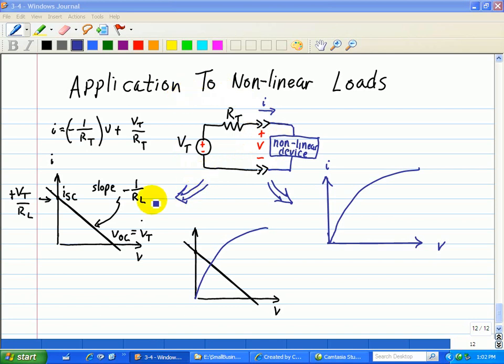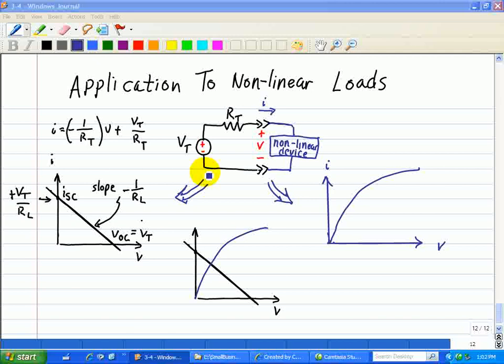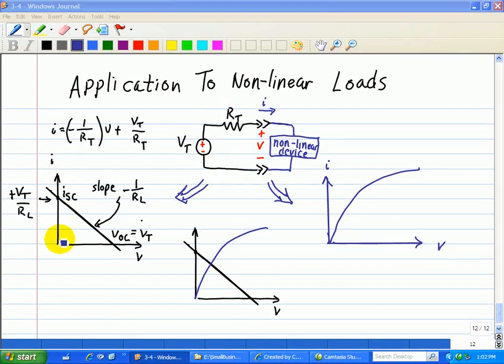So here are the IV characteristics associated with the source, in which you have the current on the vertical axis and V on the horizontal axis. And we note this equation here describes our Thevenin equivalent, our IV characteristics associated with the Thevenin equivalent. So we can take two points, where one is I equals zero. When I equals zero, then V is just equal to Vt, shown here.